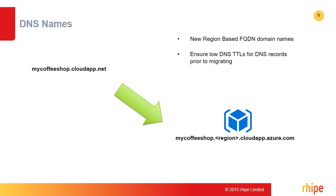The DNS name of the virtual machine will change, as ARM uses different DNS names than that of ASM. If you have services running accessible from outside, ensure that you have a low TTL in preparation to update your external DNS record.